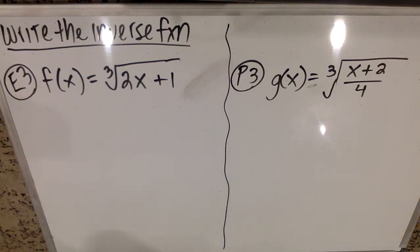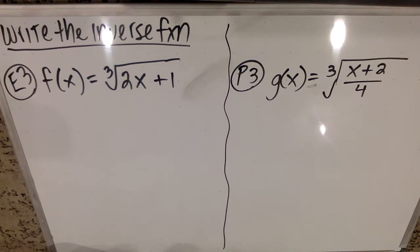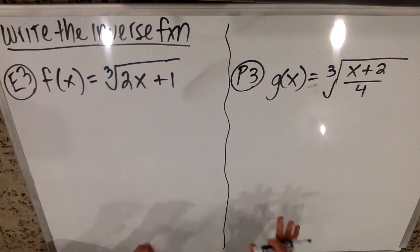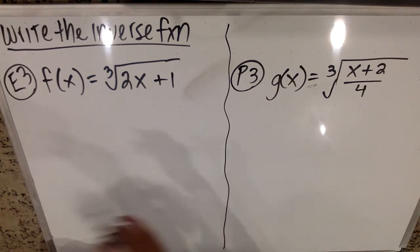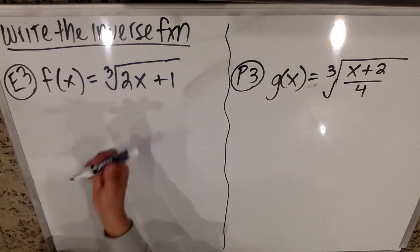Welcome to Zahner's Algebra 2 pre-calc. We're doing section 2.5 still, which is finding the inverse function. We're going to do E3 and P3, and then we'll do an E4 and P4 that are similar, finding inverse functions. And then I'll show you a kind of cool trick that you can use on some of the easier versions of this problem. And then we'll talk a little bit about the horizontal line test.